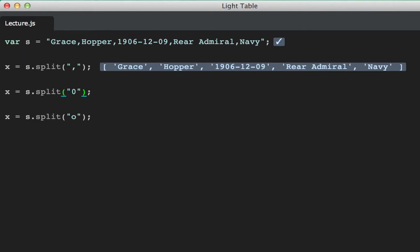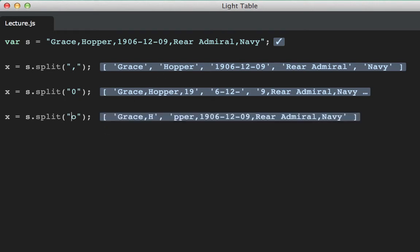We're not limited to simply commas. If we split along a zero, then that will split along the zero in 1906 and the zero in 09, giving us one, two, three strings. If we split along a lowercase o, we get two strings because there's only one o in the string. Let's try that again, but with p.